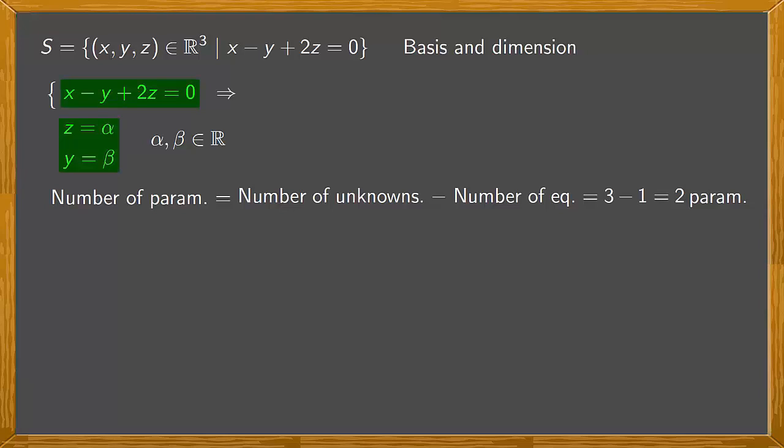Substituting in our equation we have x minus y, which is beta, plus 2z, which is alpha, equals 0. From this we get that x equals beta minus 2 alpha.